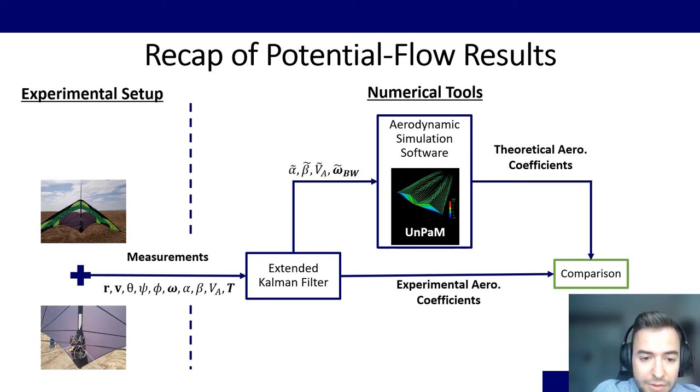And from the extended Kalman filter, we can get the estimated values of aerodynamic variables, such as the angle of attack, the sideslip, velocity, and angular rates of the body with respect to the wind. But also we can get the experimental aerodynamic coefficients.